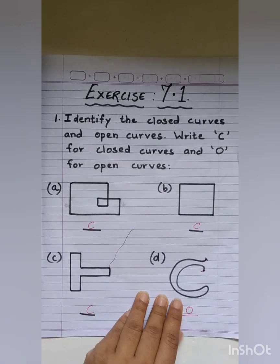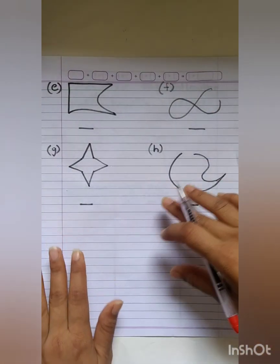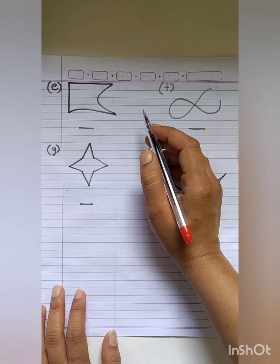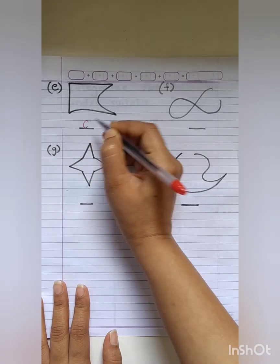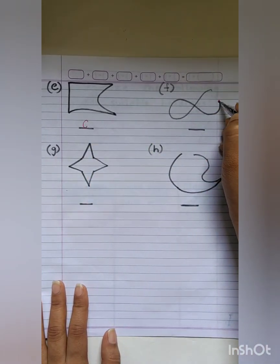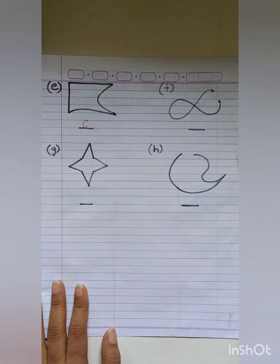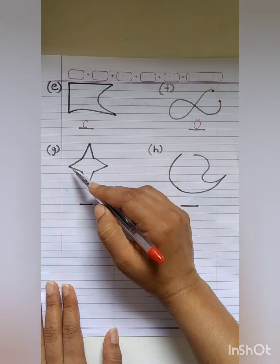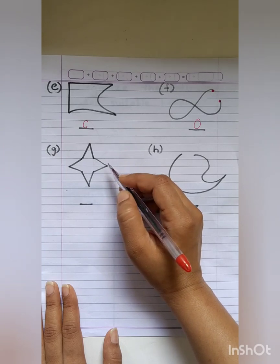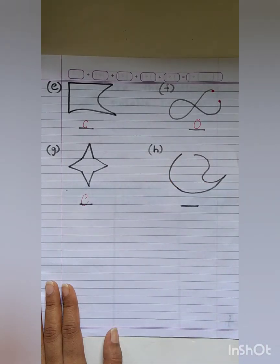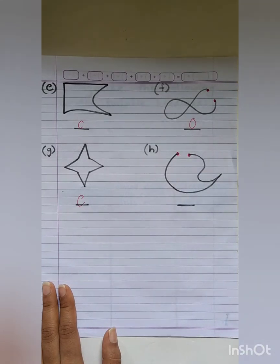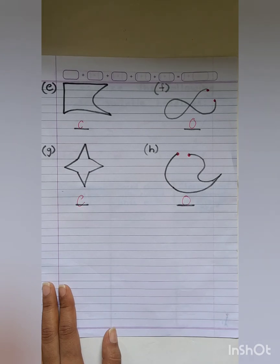Let us go through some more examples. The first figure has no two separate end points, so again this is a closed curve. The next one has two separate end points, so this is an open curve — we will write O. The following figure again has no two separate end points, so we write C for closed curve. And in the last one there are two separate end points, so this is an open curve.